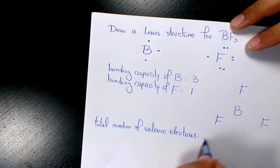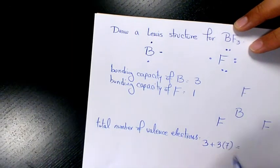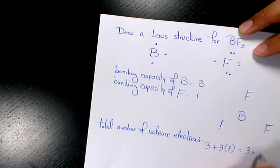Then I need to count the total number of valence electrons. That's going to be three for boron and three times seven for fluorine, so three plus 21 is going to be 24.